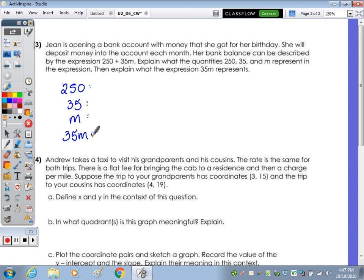Explain what the quantities 250, 35, and M represent. The 250 is her starting amount, our initial amount of money, or the money she opened the account with. She started with that amount of money, the starting amount.